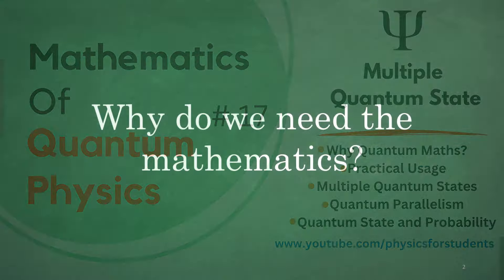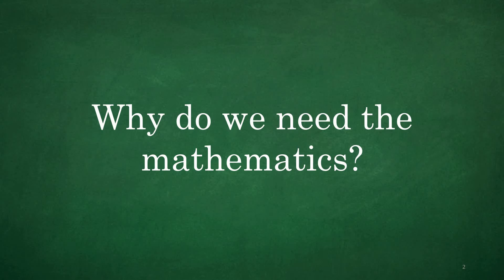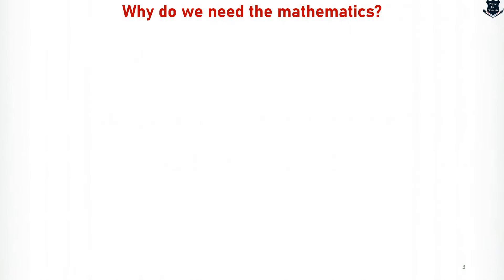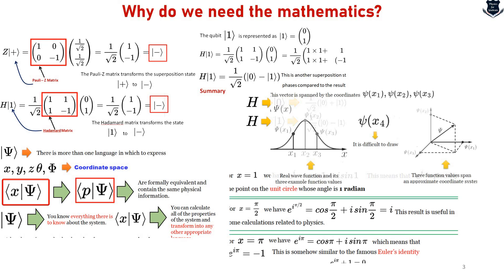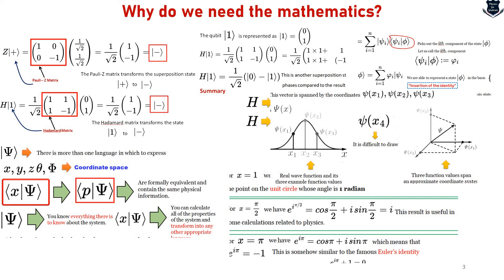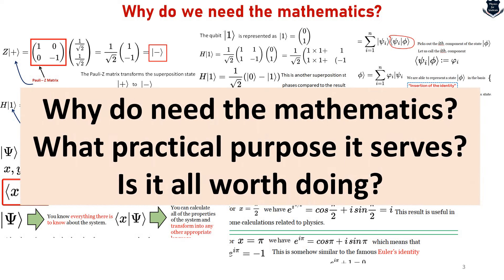First of all, when we are dealing with the mathematics part, we need to understand why we at all need the mathematics. As you can see on the screen, the mathematics of quantum physics is notoriously complex, filled with abstract concepts: wave functions, superposition, entanglement and a lot more. These ideas are expressed through dense symbolic notation that often defies intuition and requires a deep understanding of linear algebra, differential equations, probability theory and so on. The equations describe behaviors that challenge our everyday experience. And the challenge is: why do you need the mathematics? What practical purpose does it serve? And most importantly, is it at all worth doing this?